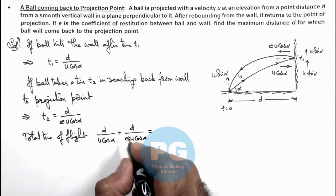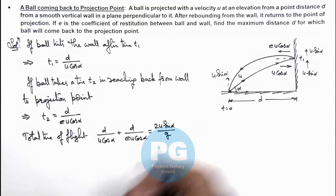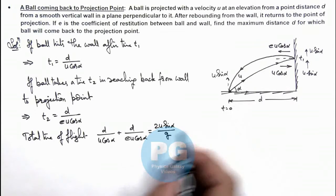This is equal to the time of flight we can write as 2u sin alpha by g, because total time of flight remains same.